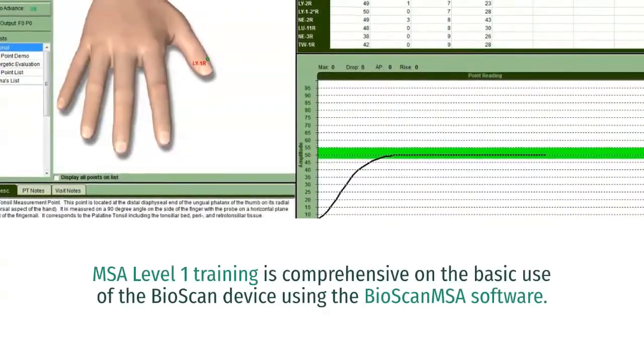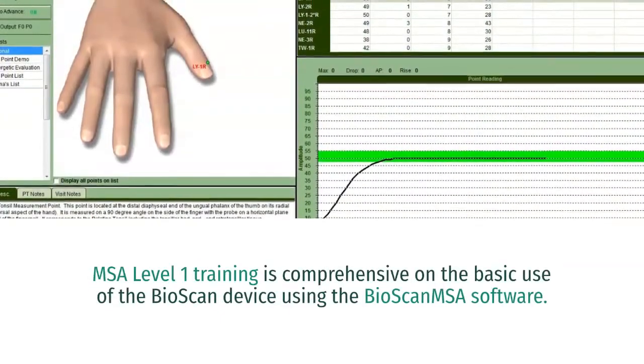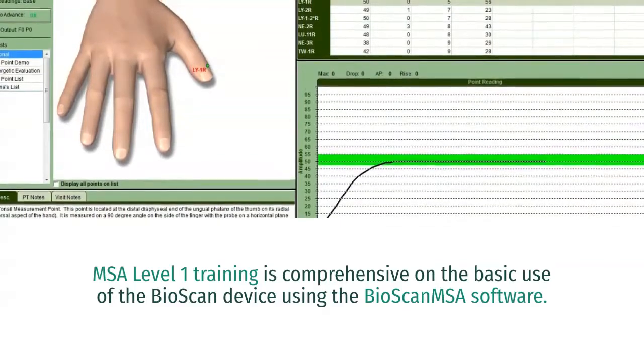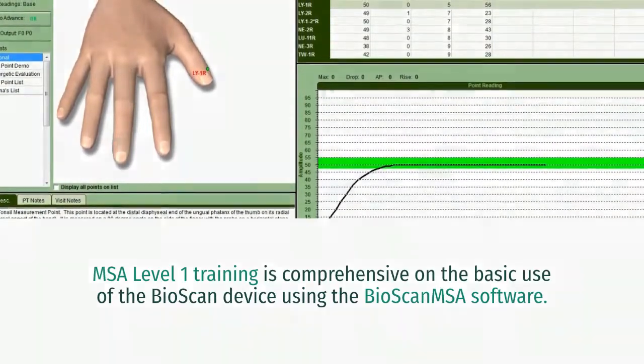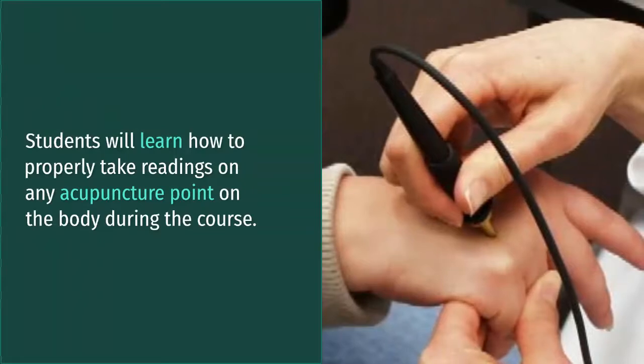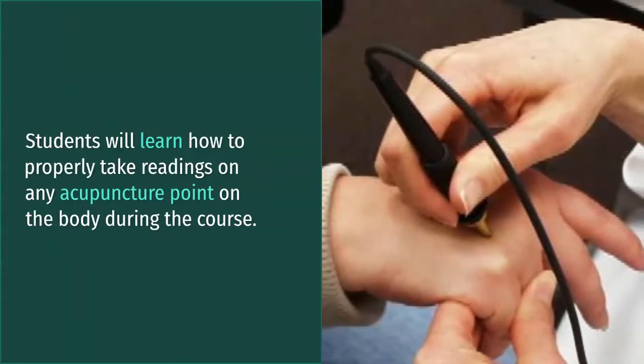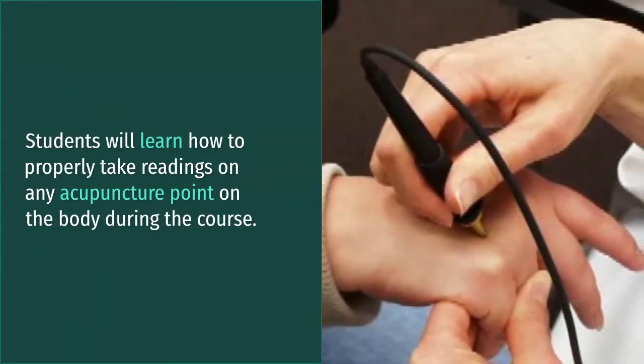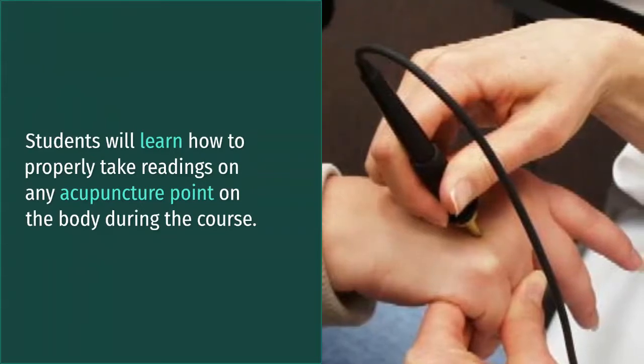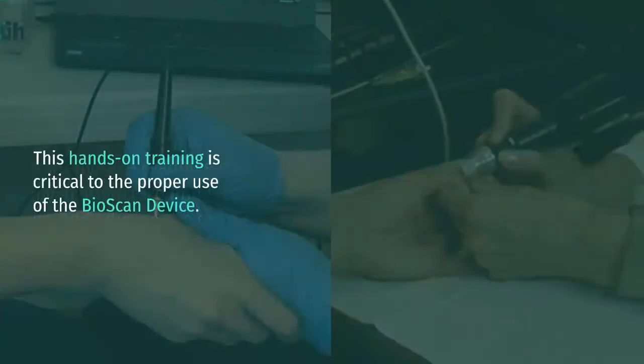MSA Level 1 training is comprehensive on the basic use of the Bioscan device using the Bioscan MSA software. Students will learn how to properly take readings on any acupuncture point on the body during the course. This hands-on training is critical to the proper use of the Bioscan device.